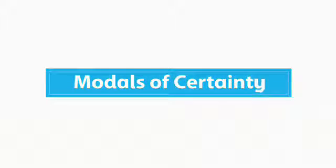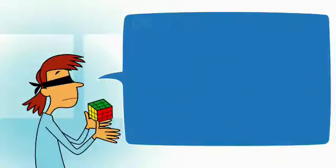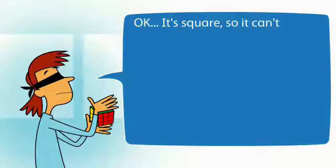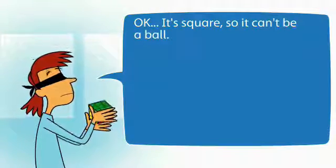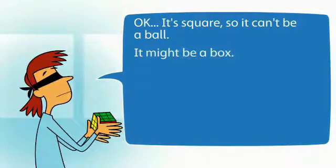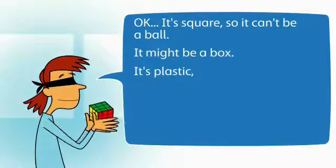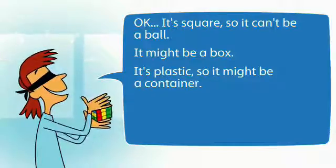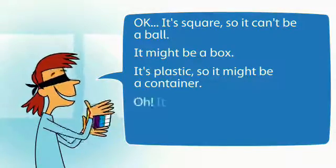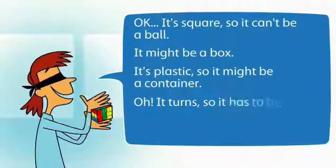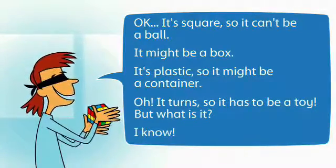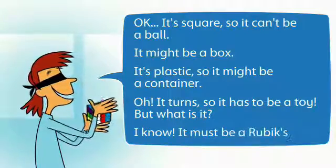Modals of Certainty. Okay, it's square, so it can't be a ball. It might be a box. It's plastic, so it might be a container. Oh, it turns, so it has to be a toy. But what is it? I know — it must be a Rubik's Cube.